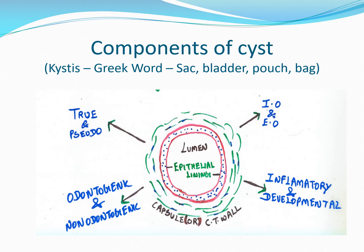A cyst can occur inside the bone — called an intraosseous cyst — or outside the bone — extraosseous. If the cyst arises from odontogenic epithelium, it is called an odontogenic cyst; if from non-odontogenic epithelium, a non-odontogenic cyst. If inflammation triggers the cyst, it is called an inflammatory cyst. If the cause is unknown, it is called a developmental cyst.